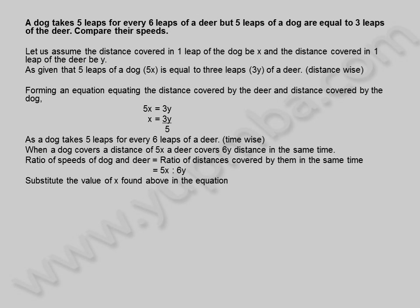Substituting the value of x found above: 5 into 3y divided by 5, is to 6y. This equals 3y to 6y, which simplifies to 1 to 2. The ratio of speeds of a dog and deer is 1 to 2.